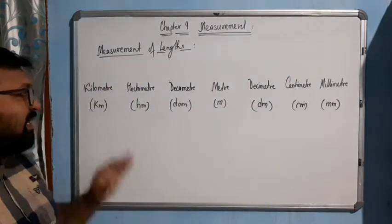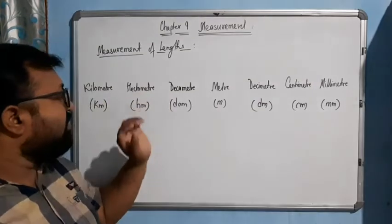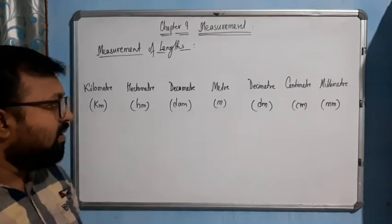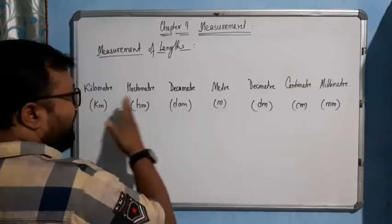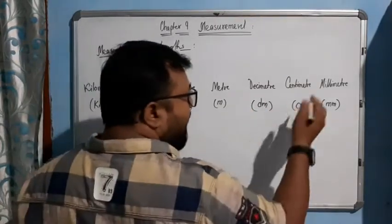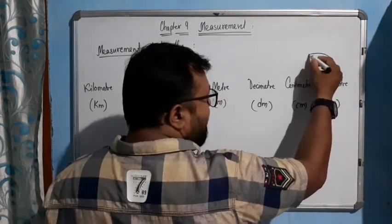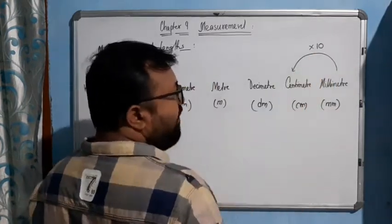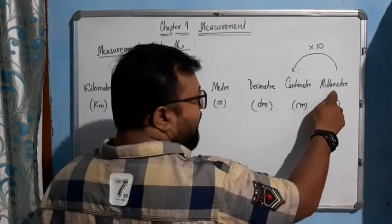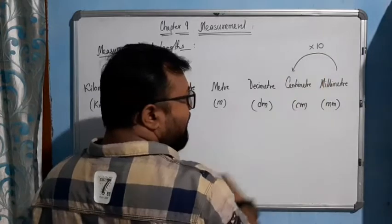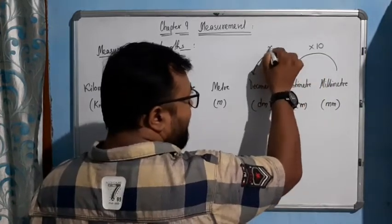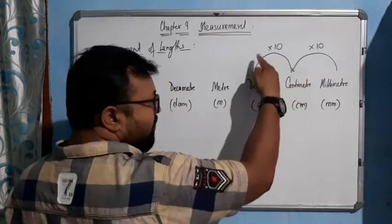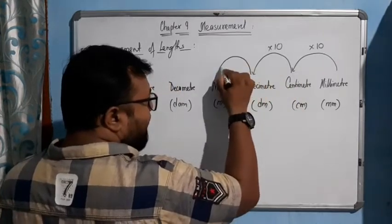These are the basic units of length. The meter is the standard unit. Now, the relationship between all these units: when you multiply millimeter by 10, it becomes centimeter — so 10 millimeters gives you one centimeter. Multiply centimeter by 10 and it becomes decimeter — 10 centimeters gives you one decimeter.